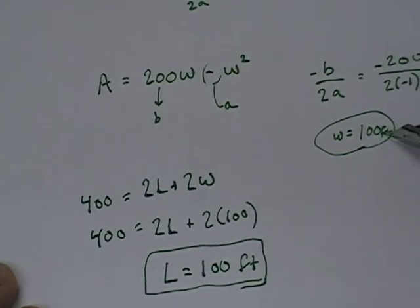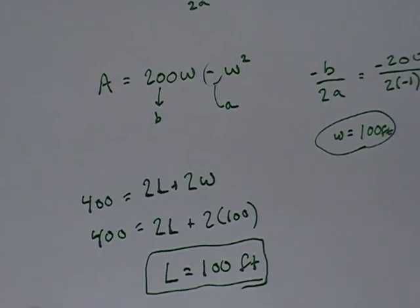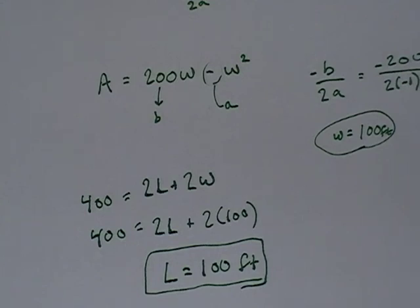So a fence of 100 feet by 100 feet will give me the maximum area. That's how you solve a problem like this. This is called maximizing or minimizing a quadratic. And if you have any questions, please let me know.